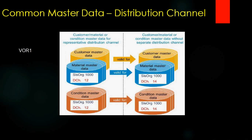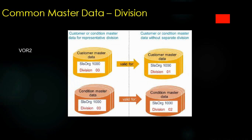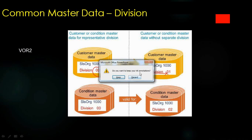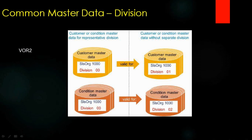VOR1 is for the reference distribution channel. We also have common master data for the division. The same concept applies: you can maintain a reference division — for example division 00 as a reference — and its data can be used by other divisions like 01. However, for division this is only valid for customer master and pricing, not for material master, because when you create a material master you only enter the distribution channel, not the division.